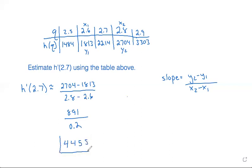So that would be our estimate of the derivative at 2.7 using a slope method to estimate. So I hope this was helpful for you. If it was, please subscribe to my channel and let me know if you have any questions.